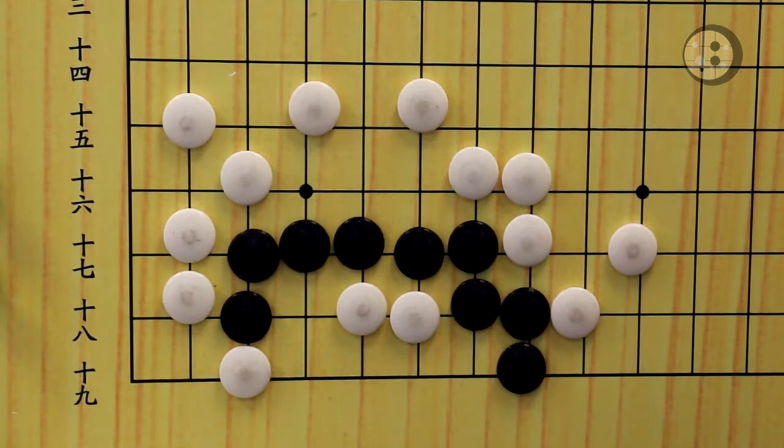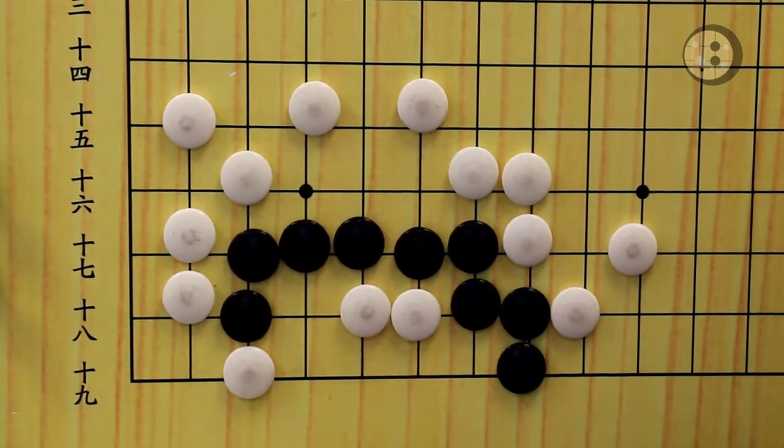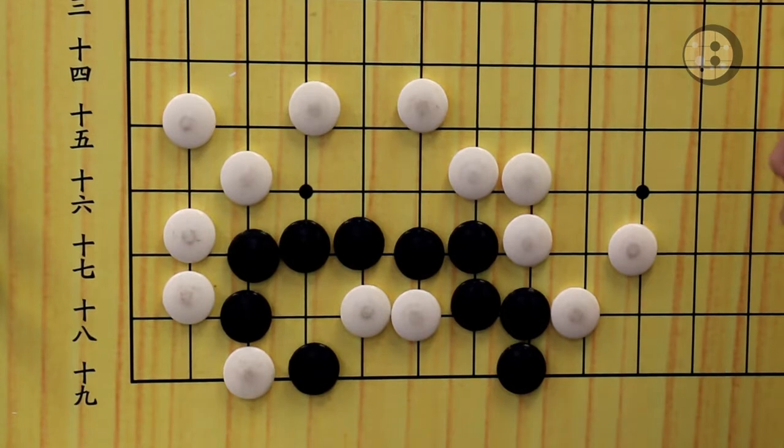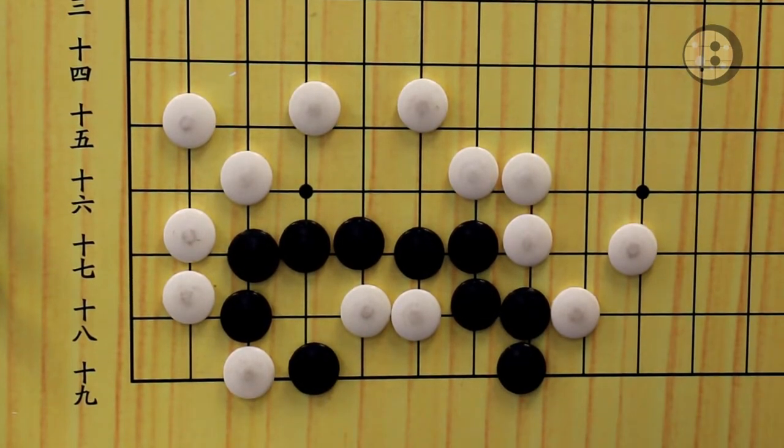Now let's talk about the second one. The bottom group is also black to live. When you look at the question, you may notice these two white stones are not endangered yet because white just played this move and tried to connect. Our first instinct should probably just cut and block. But the question here is this move is incorrect.